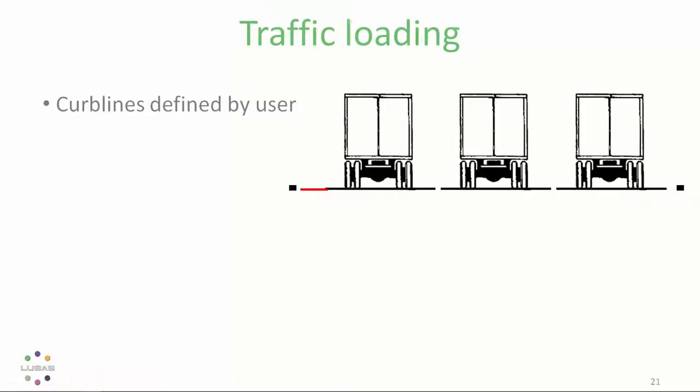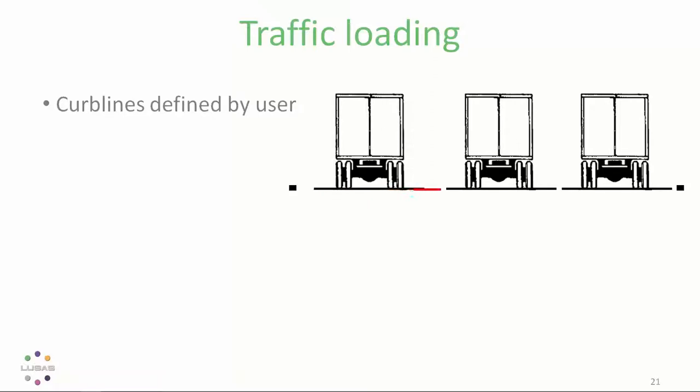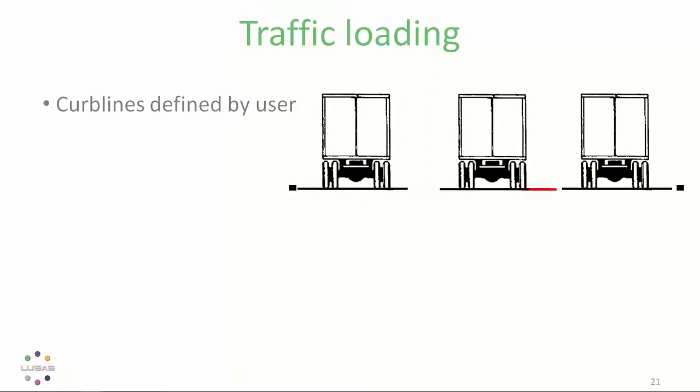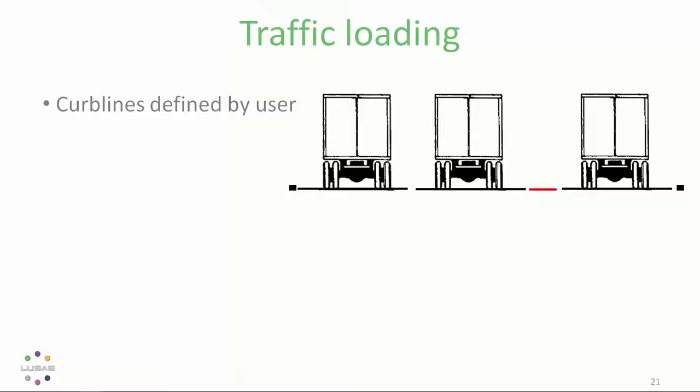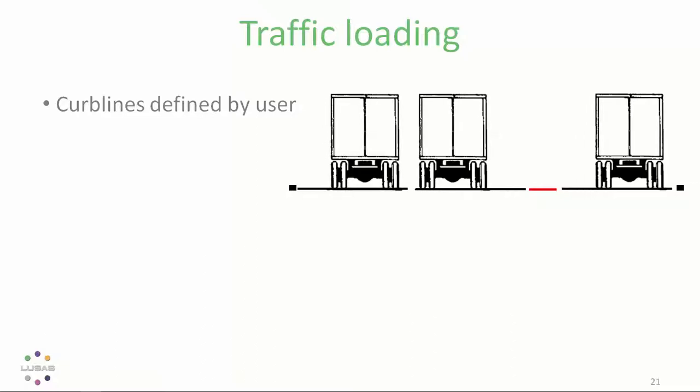And then this remaining area will be positioned automatically such that the loaded lanes are in the most onerous location for each influence surface. The vehicles are run up and down the lanes, which are in and out of the plane of the screen that you can see here. And the notional vehicles, which are six foot wide and the lane loads, which are 12 foot wide, are positioned transversely within each lane to give the most onerous effects, bearing in mind any rules about proximity to the edge of the lane, curb or railing.